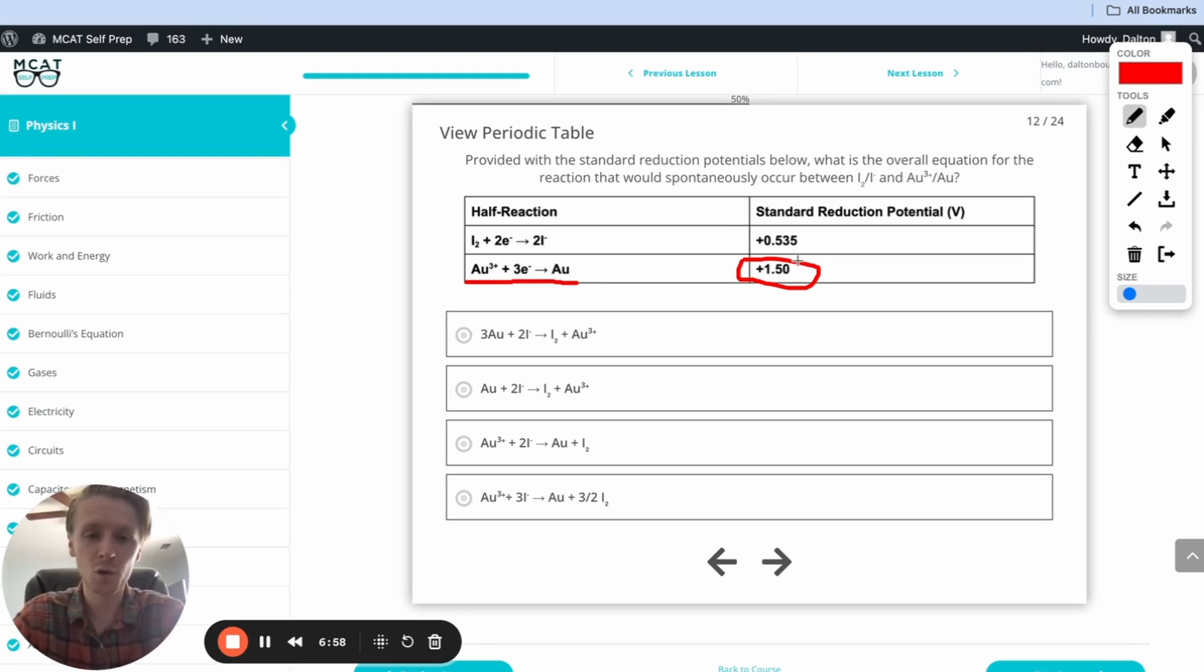But this one has the lower standard reduction potential in this case, and so it's going to be oxidized. It's not going to be reduced. In other words, it's going to lose electrons. So we want to flip this equation around. Let me cross this off here. We want to flip this around so that we write an equation where electrons are lost. The way we have it written out right now, electrons are being gained.